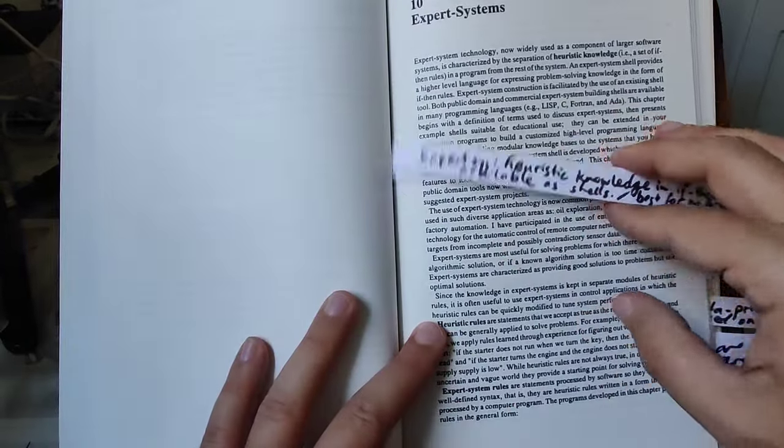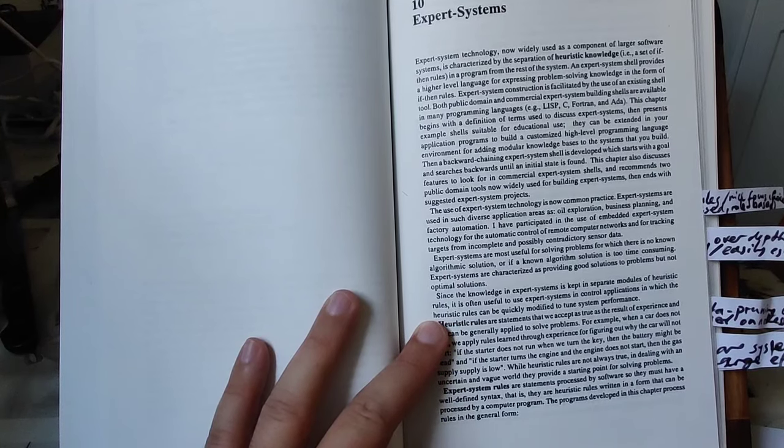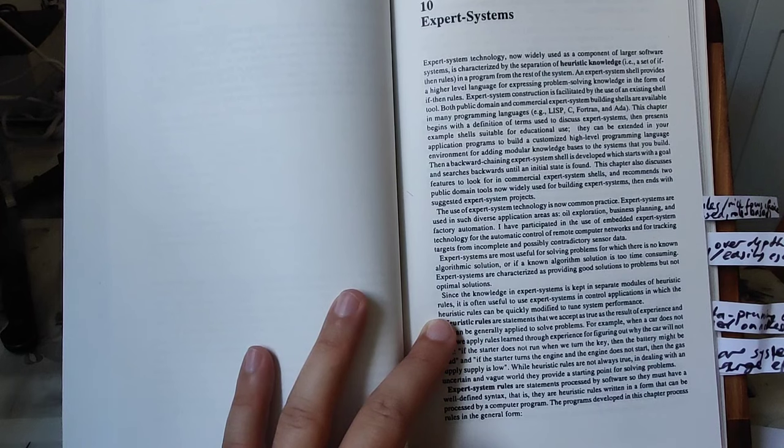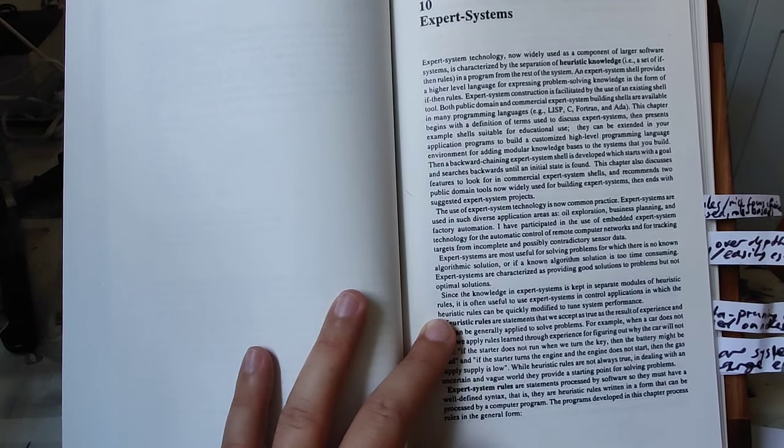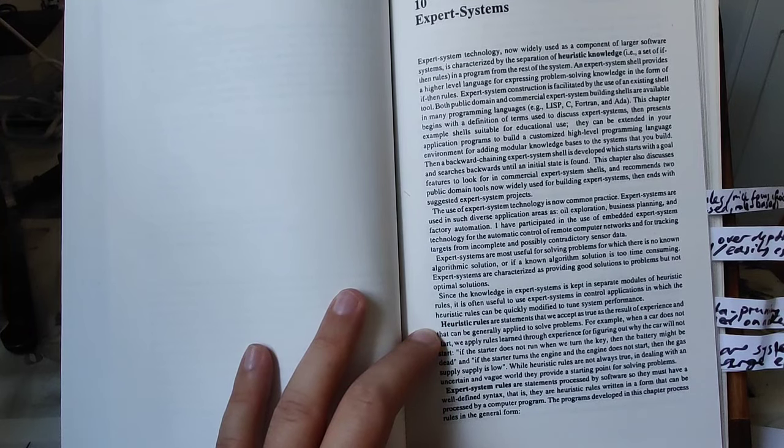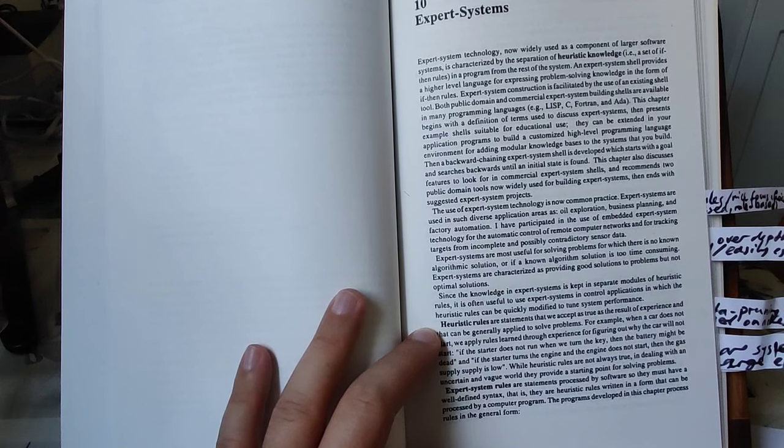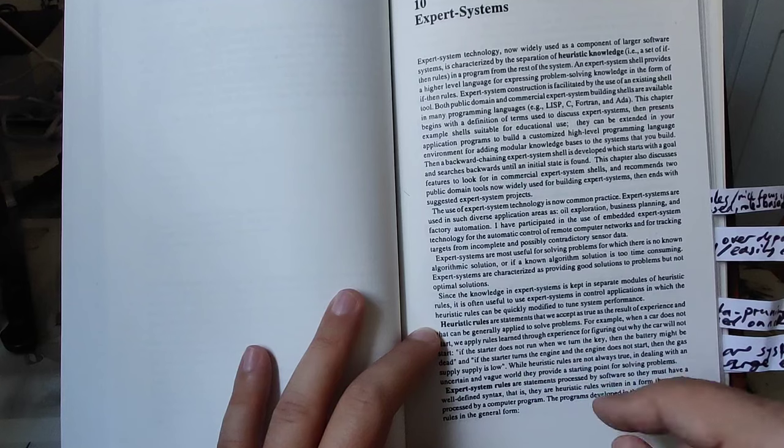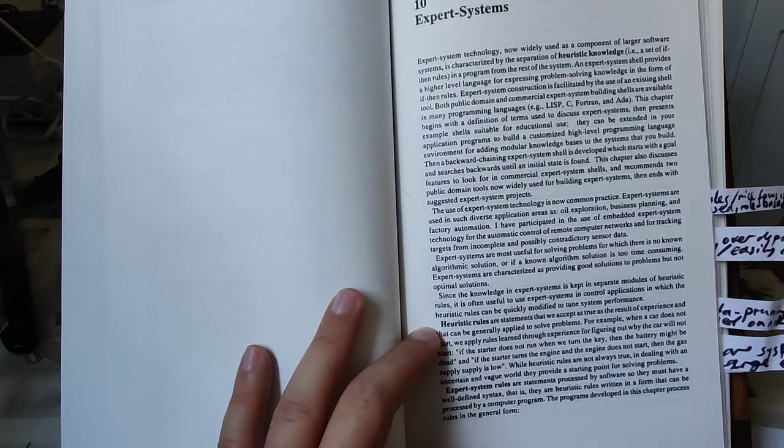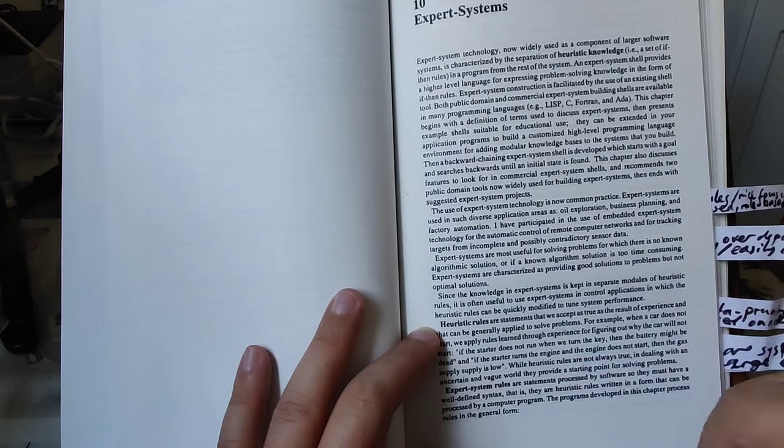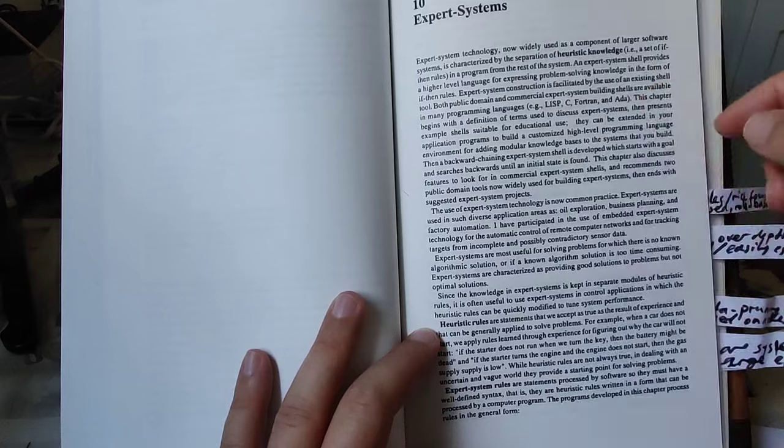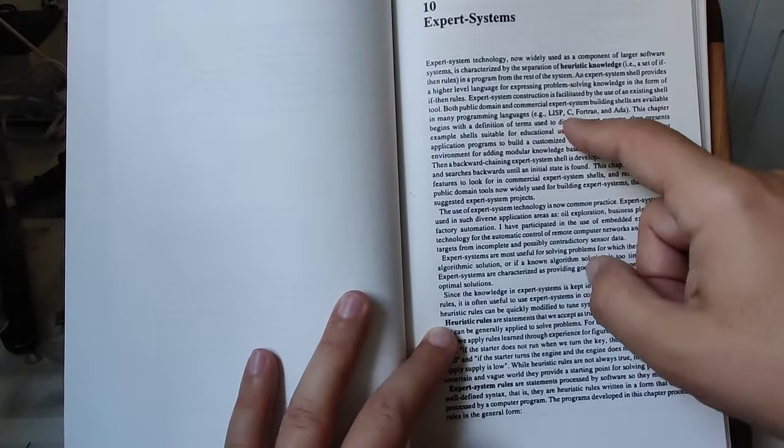Then he also proceeds to the big thing of the 70s till 90s, namely expert systems. He stresses the necessity to use heuristic knowledge and how you are implementing that in a form of chaining through if-then rules. Heuristic rules: if the starter does not turn when we turn the key, then the battery might be dead, and so on. These rules can be implemented as if-then conditions but the then parts of preceding rules can also come as if parts of following rules.